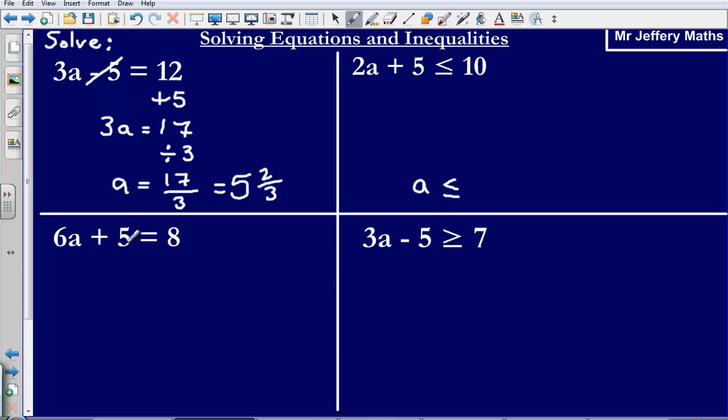Second one, I've got 6A plus 5 is equal to 8. So again I want to get rid of this plus 5. So in order to get rid of the plus 5, I'm going to have to subtract 5 and again think of this as like a set of scales.